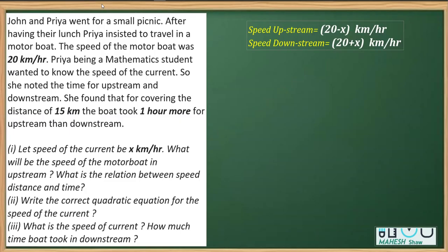We have one question from the chapter Quadratic Equation, that's a key space question. It says John and Priya went for a picnic, small picnic, and after having lunch,